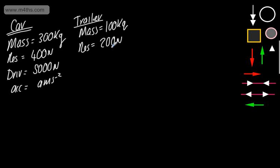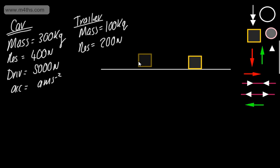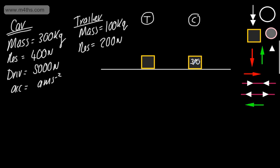So what I'm going to do is draw this up — a quick sketch of what's going on. I'll put this on a flat plane to begin with. We're going to have the trailer on the left and the car on the right, and we're always modelling these as particles. The car has a mass of 300 kilograms. I'll consider just the forces acting in the horizontal plane.